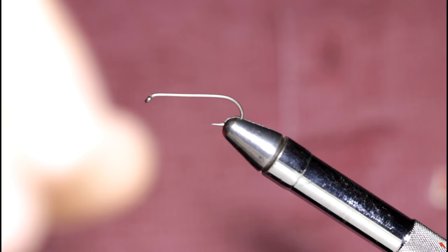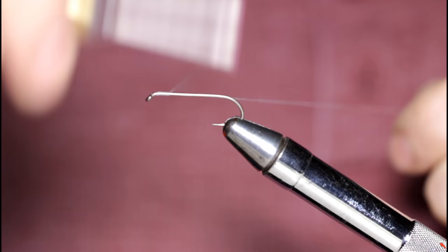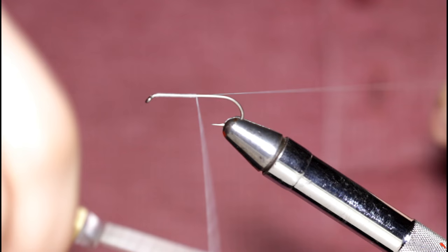Now I'm going to grab the front hook. You can really use any hook you want. The general rule is that it's at least one size bigger than the rear hook. So I'm going to start the same thread, 210 UTC thread in white. I'm going to wind this down to the point of the hook.